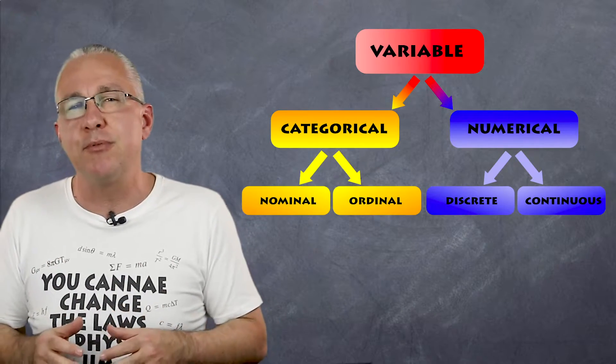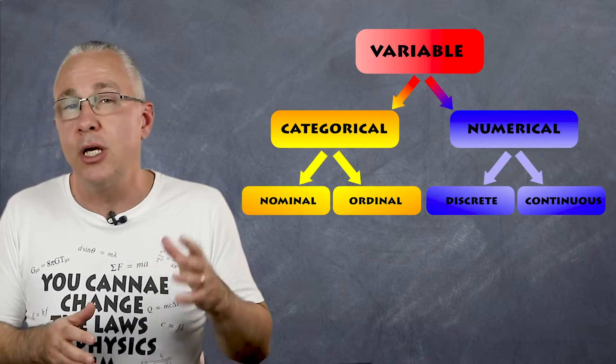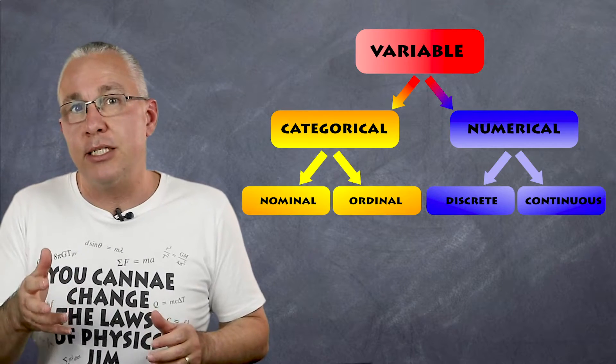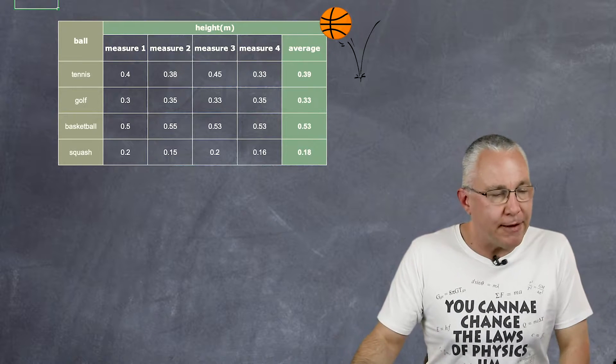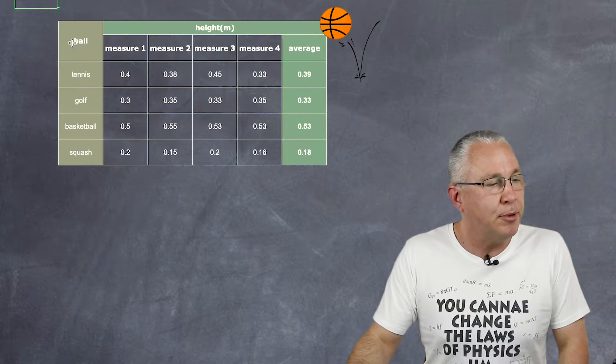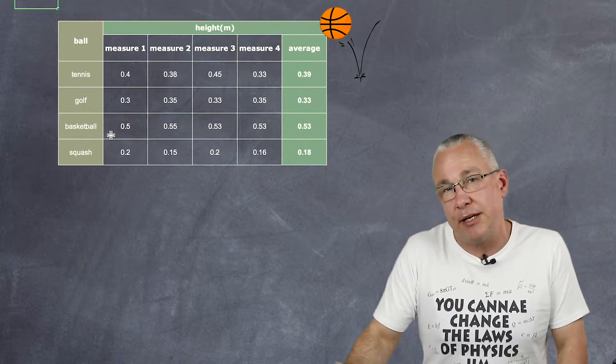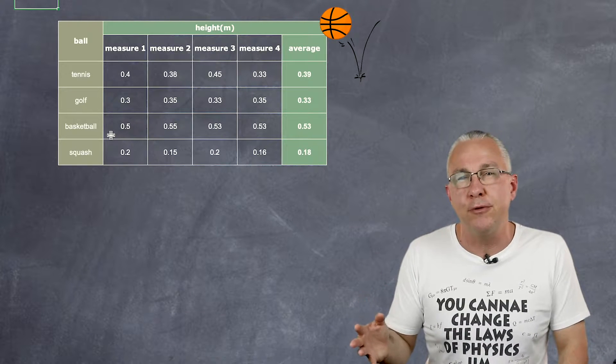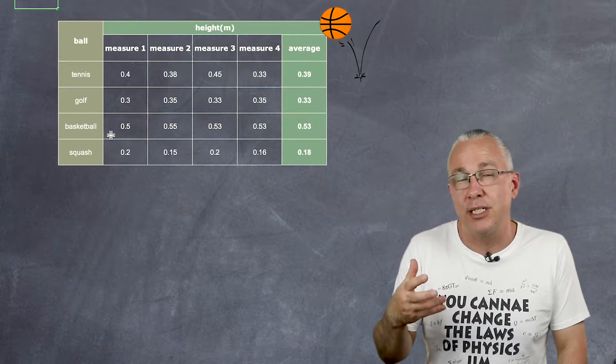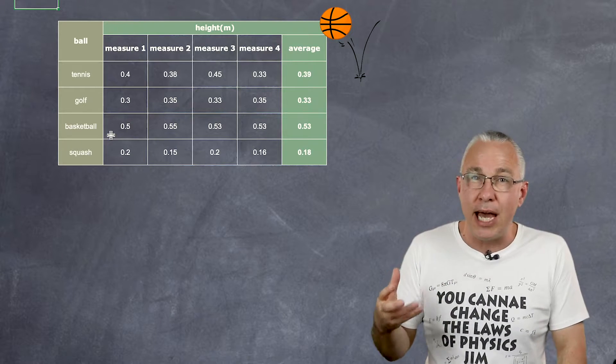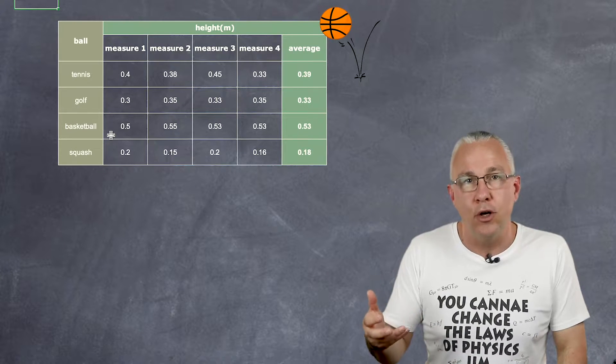To explain those different types of variables, the best way to discuss this is to look at some data and ask the question what type of data it is and then address what type of graph I use. So let's start. Here we have our first set of data. I have an experiment where my independent variable is different types of balls and I'm going to measure the height at which they bounce off from a set particular height. This is categorical type of data because we have the different types of balls as a category, but because they have names associated with them we say this is not only categorical but also nominal.